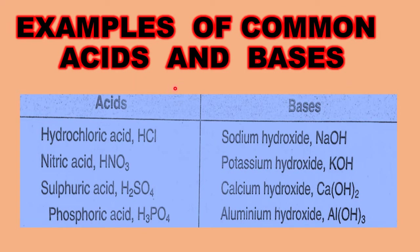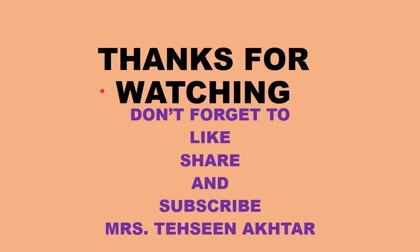Here are examples of common acids and bases. Acids: hydrochloric acid (HCl), nitric acid (HNO3), sulfuric acid (H2SO4), and phosphoric acid (H3PO4). Bases: sodium hydroxide, potassium hydroxide, calcium hydroxide, and aluminum hydroxide. That's all about the concepts of acids and bases.